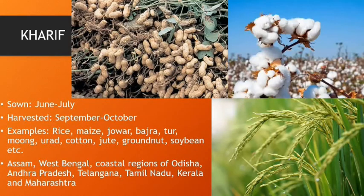The Kharif crop is sown in June and July and harvested in September and October. Examples include rice, maize, jowar, bajra, tur, moong, urad, cotton, jute, groundnuts, soybean, etc. It is grown in the states of Assam, West Bengal, coastal regions of Odisha, Andhra Pradesh, Telangana, Tamil Nadu, Kerala, and Maharashtra.